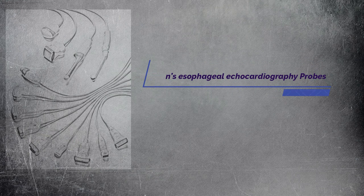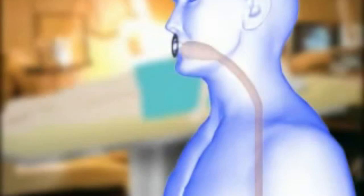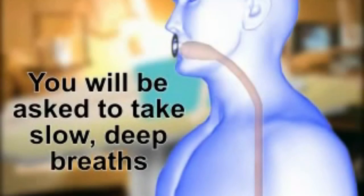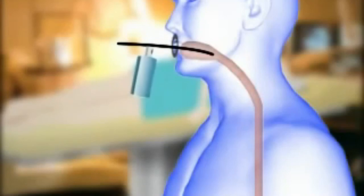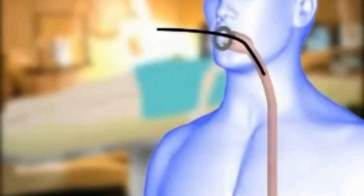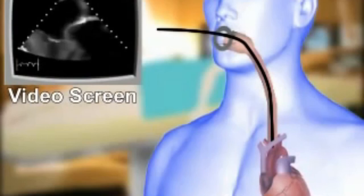Let's know about transesophageal echocardiography probes. Transesophageal echocardiography, or TEE, is a test that produces pictures of your heart. TEE uses high frequency sound waves — ultrasound — to make detailed pictures of your heart and the arteries that lead to and from it. Unlike a standard echocardiogram, the echo transducer for TEE is attached to a thin tube that passes through your mouth, down your throat and into your esophagus. Because the esophagus is so close to the upper chambers of the heart, very clear images of those heart structures and valves can be obtained.